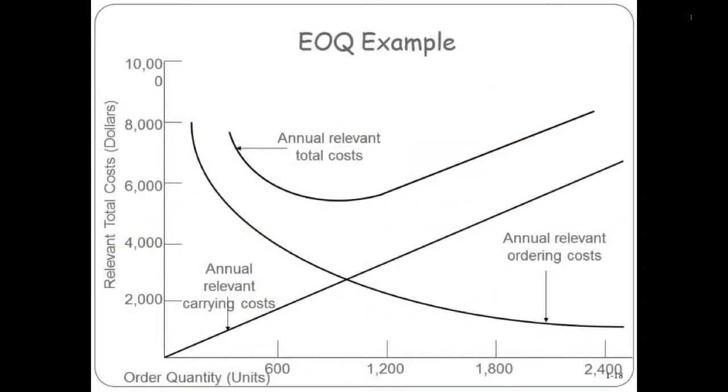Same picture we had at the beginning. It shows that the economic order quantity, when you hit this minimum point, is 988, resulting in a total cost of $5,434.